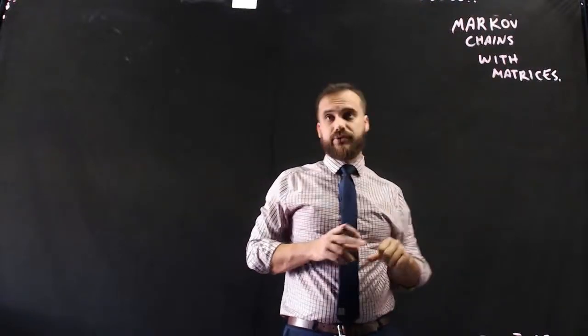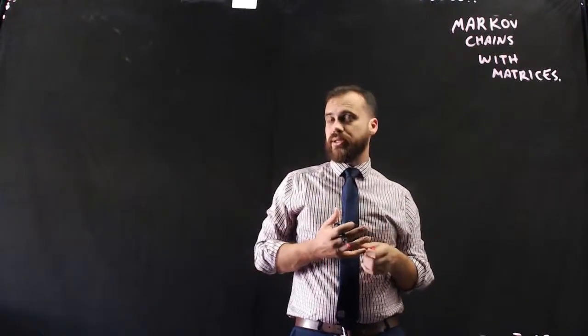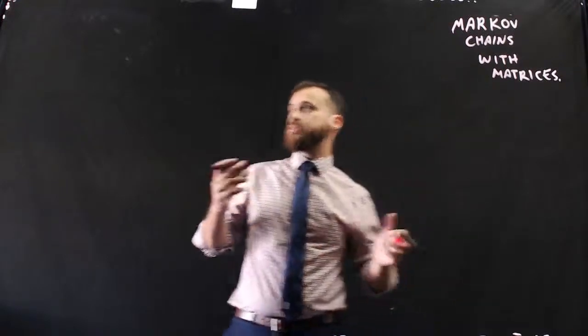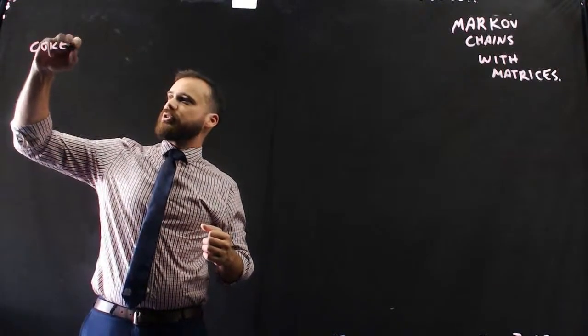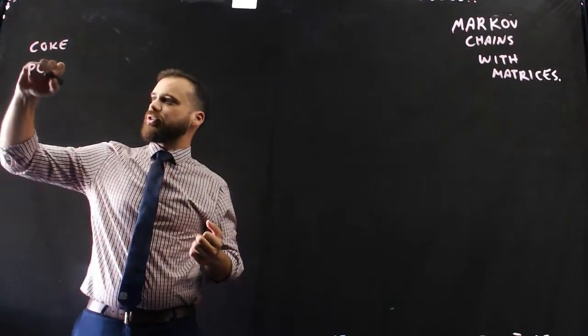So look at something here called Markov chain. We're going to use matrices to do it. Jump straight into an example. Let's talk about two kinds of people. Some people like to drink Coke, and some people like to drink Pepsi.